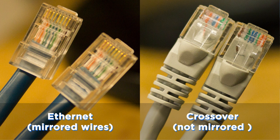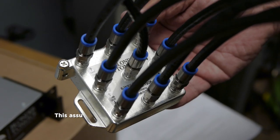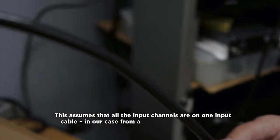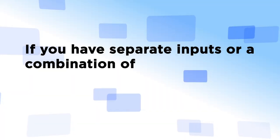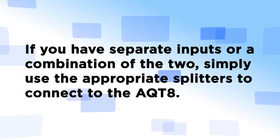Now in addition, you should also have your own 8-way splitter along with coax cables. This assumes that all input channels are in one input cable, in our case from a single broadband antenna. If you have separate inputs or a combination of two, simply use the appropriate splitter to connect to the AQT8.